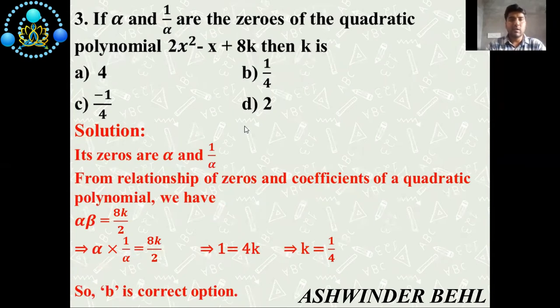Now, we will see third question. If α and 1/α are the zeros of the quadratic polynomial 2x² - x + 8k, then the value of k is: a) 4, b) 1/4, c) -1/4 and d) 2.